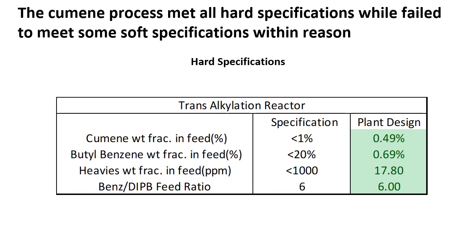Similar to the alkylation reactor, there were also specifications for our transalkylation reactor based around the concentration of feeds entering the reactor. We are staying below those concentrations as shown in the green column. The hard spec for the benzene to DIPB ratio was provided as being 6, and we are meeting that spec exactly.